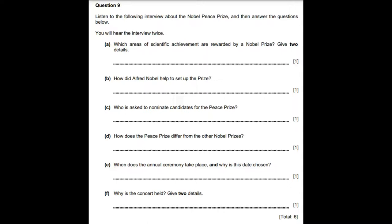Hello and welcome to our special programme. Mrs Edith Maruza is here to talk to us about the Nobel Peace Prize — she has just written a book about its history. A Nobel Prize is an international award managed by the Nobel Foundation in Sweden. Since 1901, prizes have been awarded to men and women from all corners of the world for outstanding achievements in physics, chemistry, medicine, literature, and for work in peace. Each prize consists of a medal, a personal diploma, and a cash award.